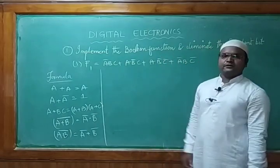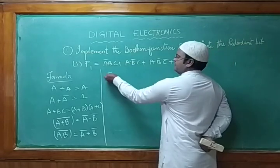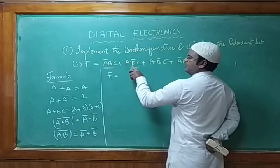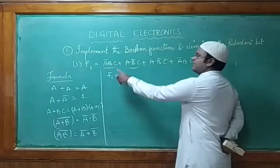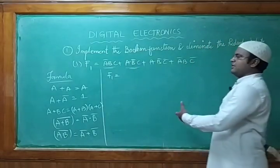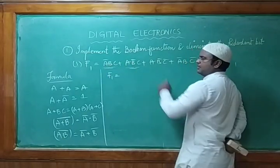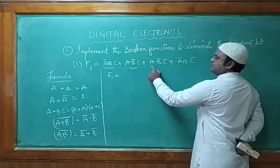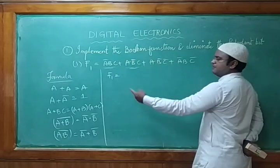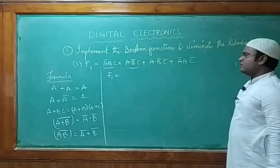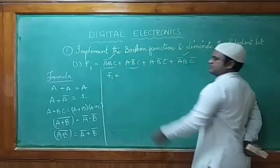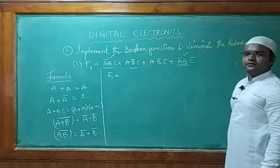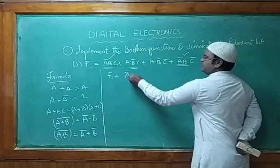To solve f1, we look for common terms. Taking c as common from terms 1 and 2 gives ā·b + a·b̄, but there is no applicable formula for that. However, in terms 2 and 3, a·b̄ is common — taking a·b̄ common gives c + c̄. Similarly, in terms 1 and 4, ā·b is common, and taking that common also gives c + c̄.